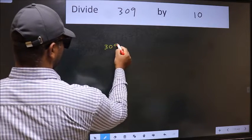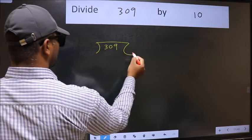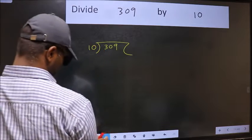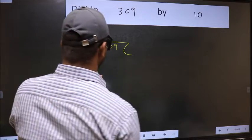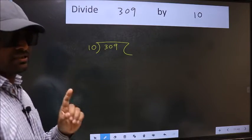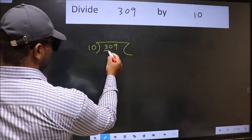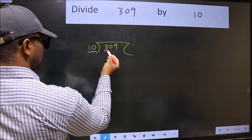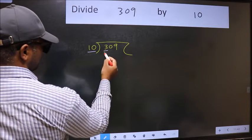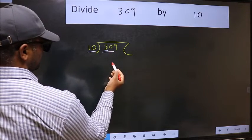309 and 10 here. This is your step 1. Next, here we have 3 and here 10. 3 is smaller than 10, so we should take two numbers, 30.